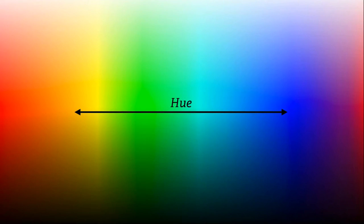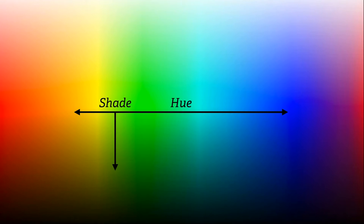Before I continue, just so you guys know what I'm talking about when I say hues, shades, and tints: a hue is a color — think red, green, or blue. In the RGB spectrum that means moving this way. A shade means a darker color, so that means moving this way. And a tint means a lighter color, moving this way.